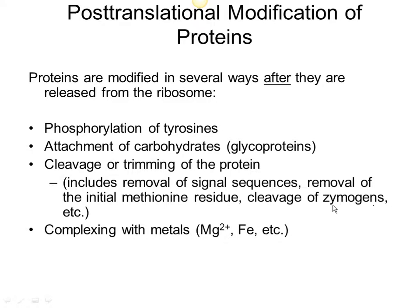Cleavage of zymogens — enzymes which have to be cut before they're activated — is another example. Another post-translational modification is that most enzymes and many proteins have to complex with metal ions such as magnesium or iron. For example, hemoglobin has to have an iron in its porphyrin ring structure. Most of your enzymes have to complex with magnesium in order to function correctly. If you don't get enough magnesium, iron, or other metal ions in your diet, you can have enzymes that aren't able to function correctly.